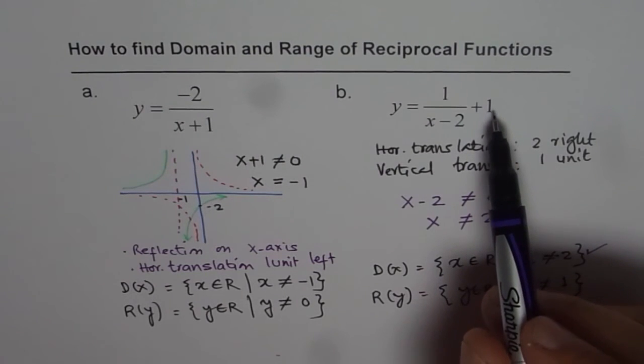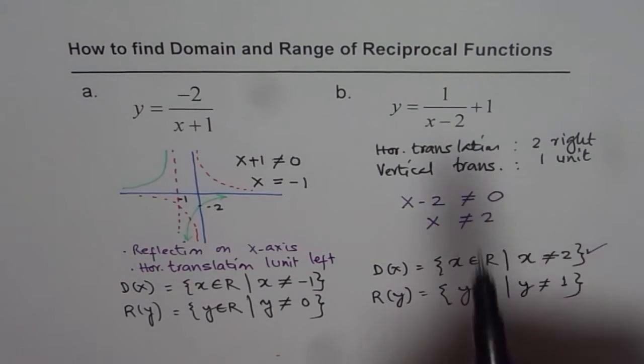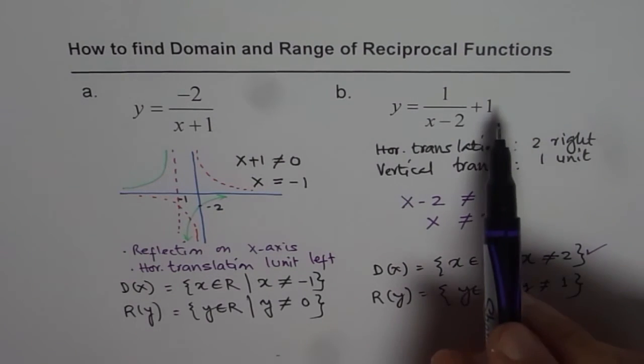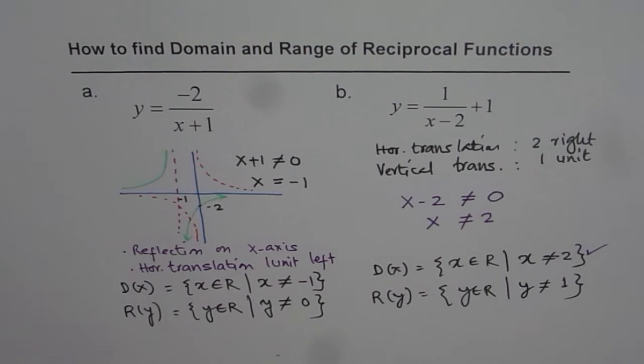Now as far as the range is concerned, since we translated 1 unit up, range is not equal to 1. The function is going to approach 1, but it will never be 1.